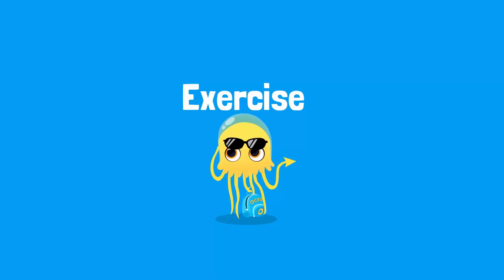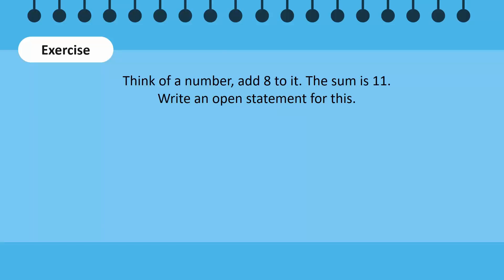Let's do an exercise. Think of a number such that when we add 8 to it, the answer we get is 11. To write the open statement for this, we first write delta, since that is the number we need to find, and then add 8 to it. The sentence tells us that the result is 11, therefore it is equal to 11. Delta can be replaced with any letter, so let's put p in this case. The open statement then becomes p plus 8 equals 11.